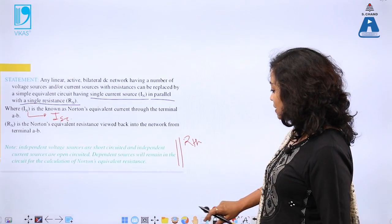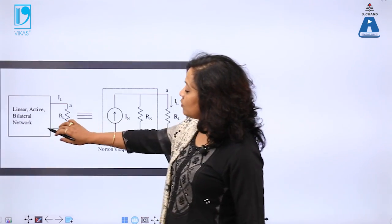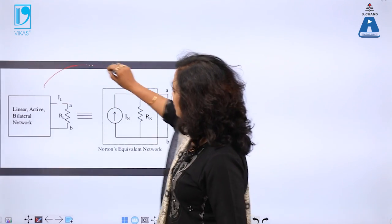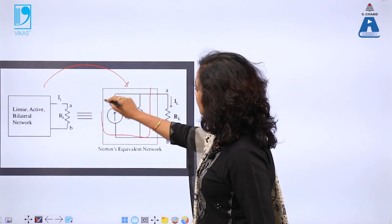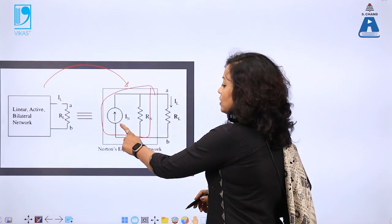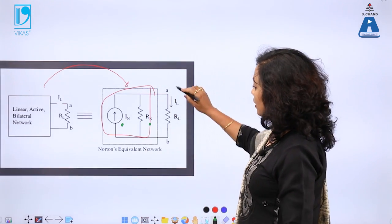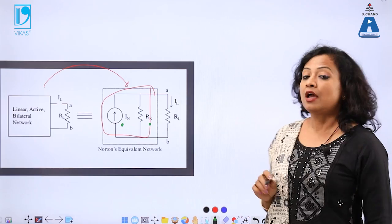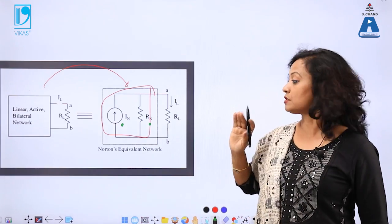These two methods are analogous in their procedure to find out I_L. Using Norton's theorem, the black box containing internal circuitry is converted into a current source in parallel with a resistance. This is the equivalent circuit consisting of current source I_N (Norton current) in parallel with R_N (Norton resistance). I replace back R_L and find out current I_L. Any complicated circuit with N number of branches can be converted into a current source in parallel with a resistance.